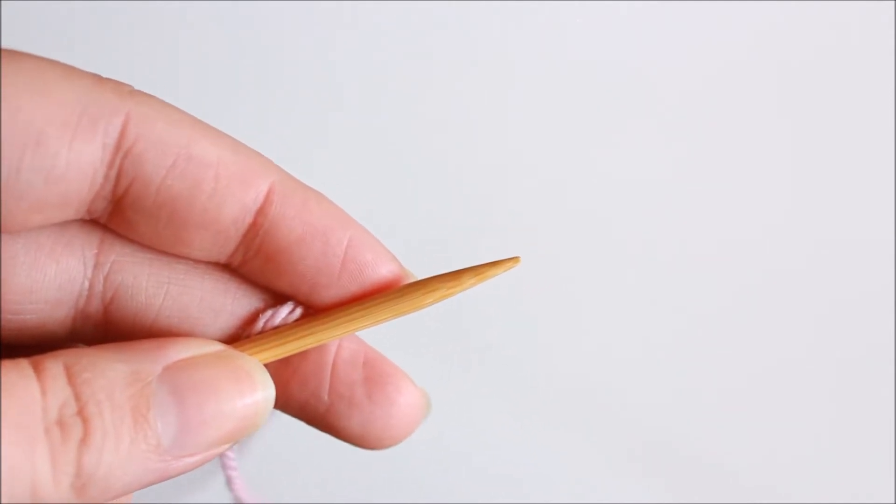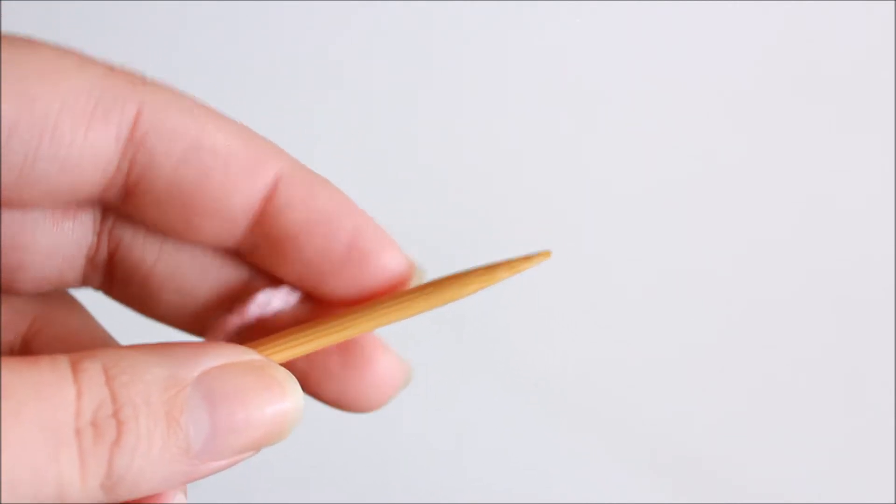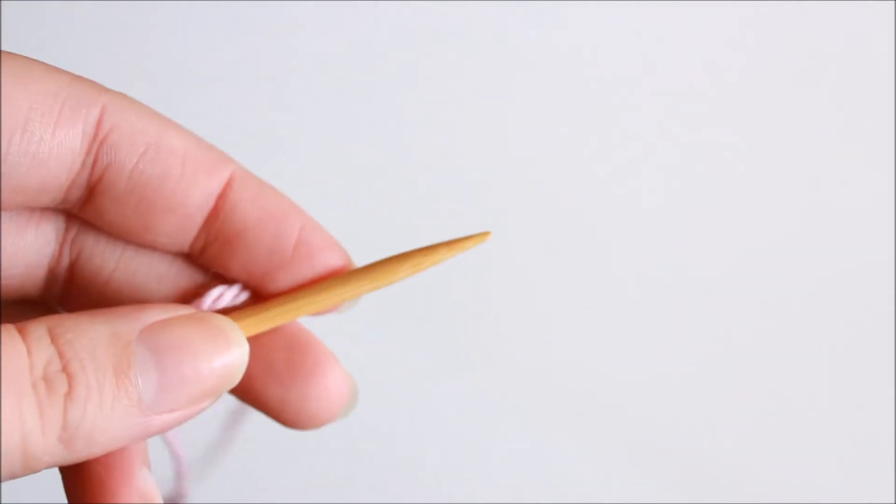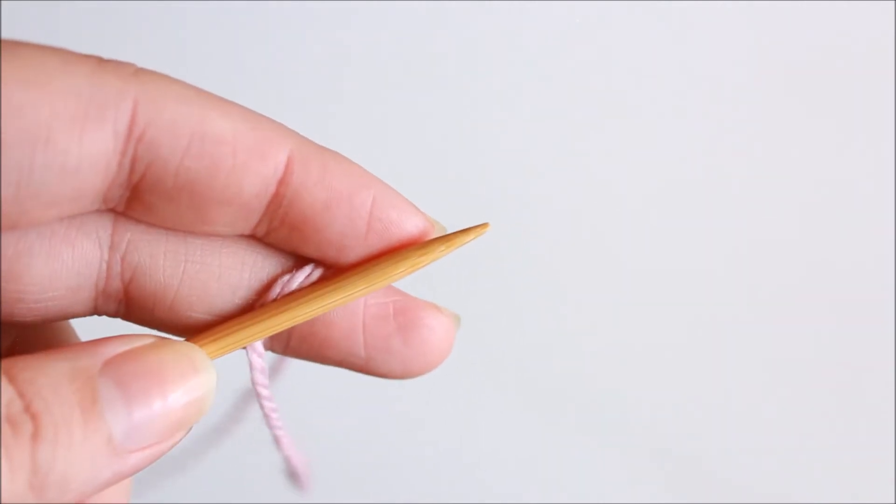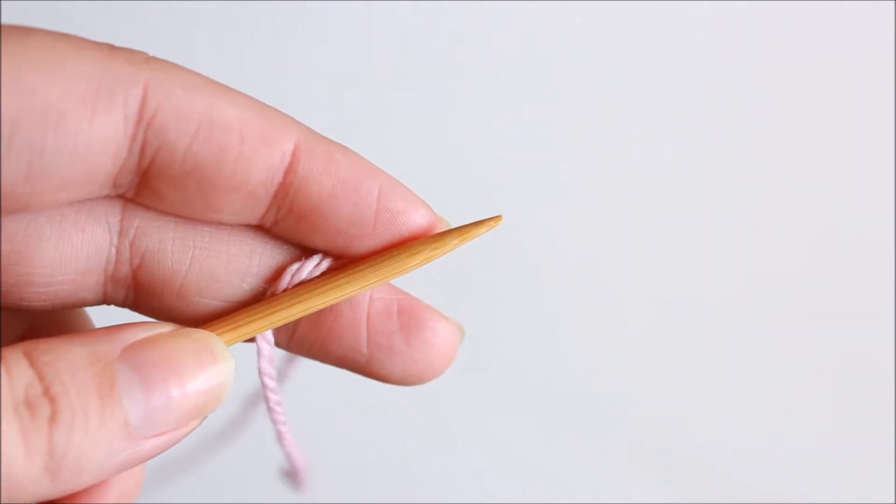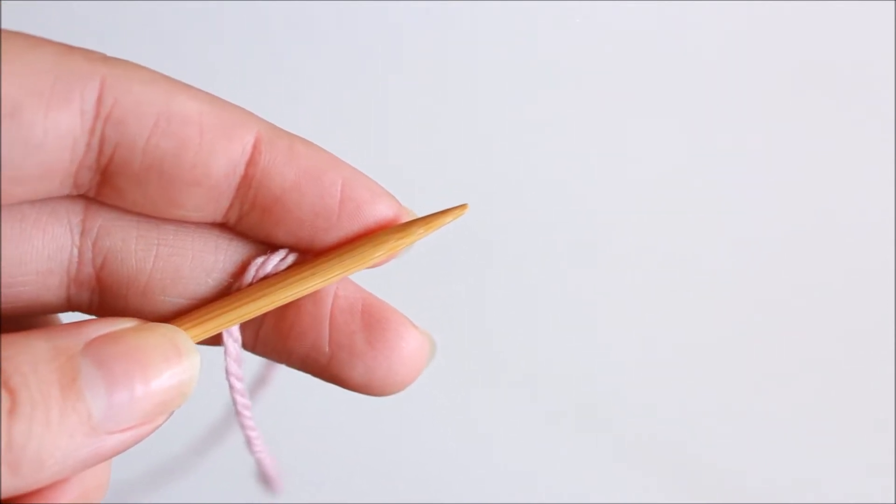It has a really lovely stretchy result and the actual cast on will mimic the patterning that your knit one purl one rib has as well. This technique is similar to the knitted and cable cast on method. So if you've ever worked those methods before this should be really easy.